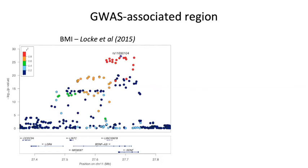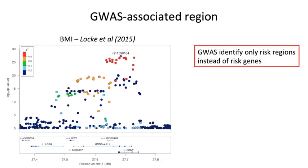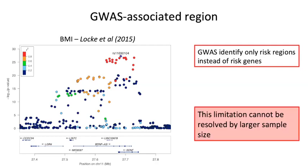In this plot, each point represents one SNP. For each SNP, we plot on the x-axis the position, and on the y-axis the minus logarithm of the p-value. As you can see in this region, we have many associated SNPs, so using only the GWAS results it is very difficult to identify the causal variant or the causal gene. This limitation cannot even be resolved by using much larger sample sizes.